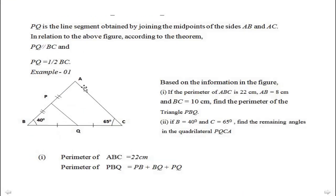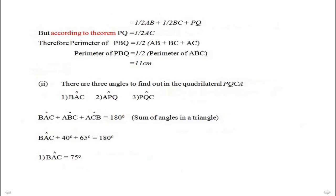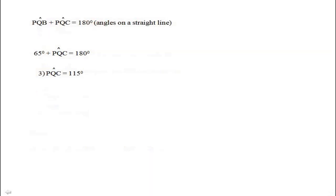Angles ACQ and PQB are corresponding angles. Therefore, angle ACQ equals angle PQB equals 65 degrees. Since angle PQB and angle PQC are angles on a straight line, angle PQB plus angle PQC equals 180 degrees. So 65 plus angle PQC equals 180 degrees, and angle PQC can finally be obtained as 115 degrees.